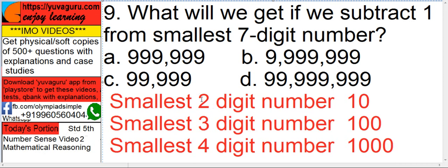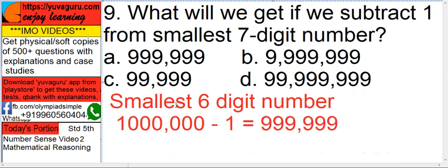So if you want a 2-digit number, you get 10 — that's 1 followed by 1 zero. A 3-digit number has 2 zeros, a 4-digit number has 3 zeros. So a 7-digit number will have 6 zeros — that is 1 million. Now, 1 million minus 1: as we have done this problem earlier, just count the number of zeros and write that many nines — so the answer is 999,999.